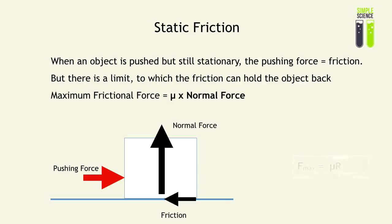This equation can be written simply as F_max = μR, or F = μR. In some situations R is equal to the weight of the object, so you can write F_max = μmg, or whichever form you prefer.